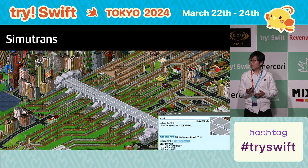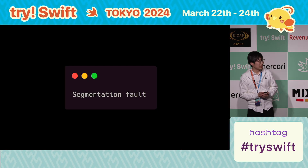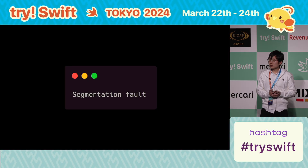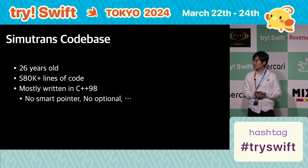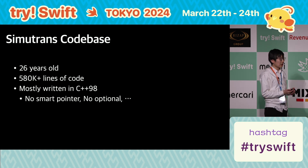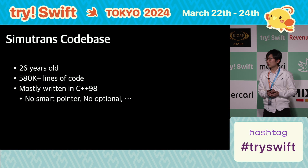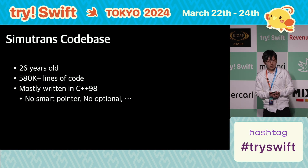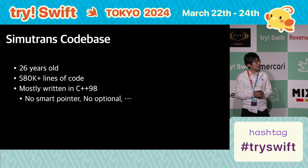However, SimTrans players frequently see segmentation faults and crashes. So what makes this happen? Let's look into the SimTrans code base. SimTrans is currently 26 years old and has almost 600,000 lines of code. It is mostly written in C++98, so it's been legacy.